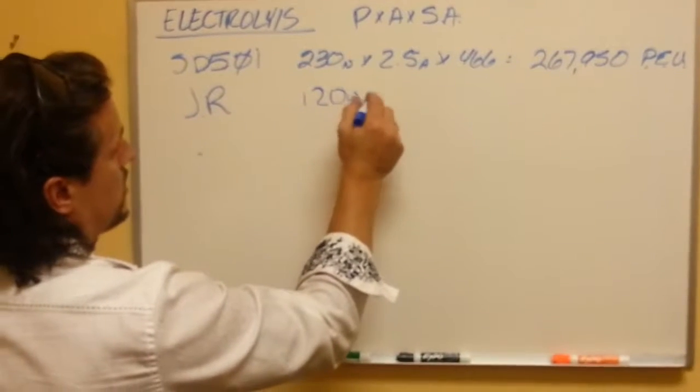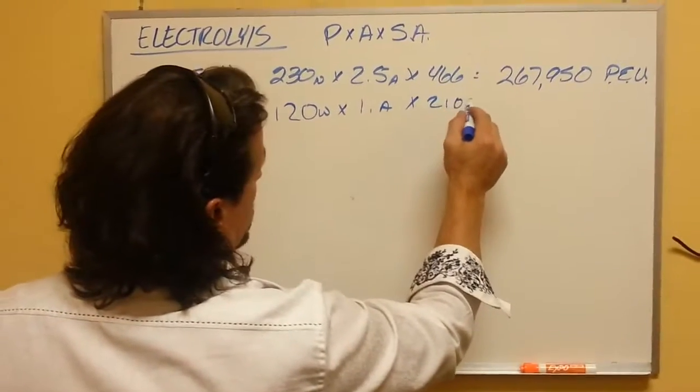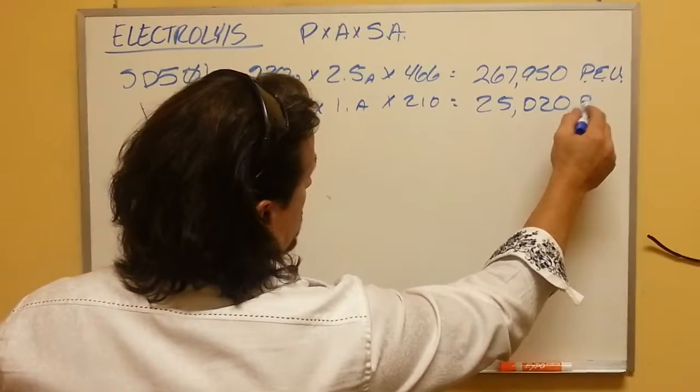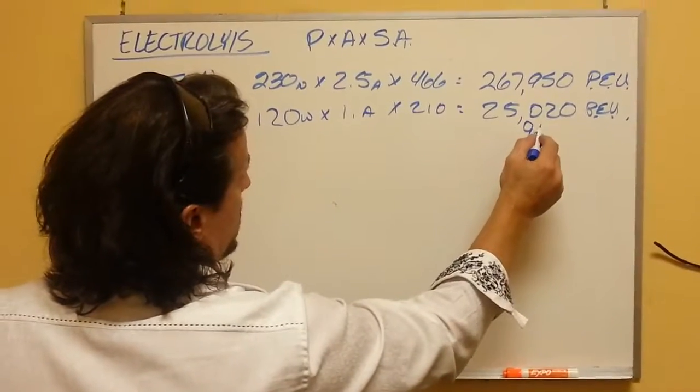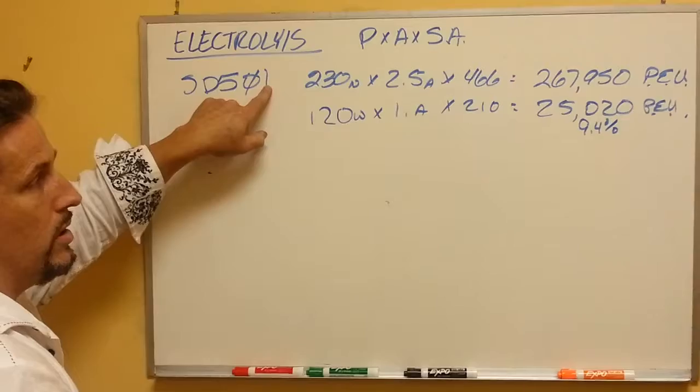It has 120 watts, 1 amp, and 210 square inches of surface area. That gives you a number of 25,020 approximately, which is actually only 9.4% power compared to the SD501.